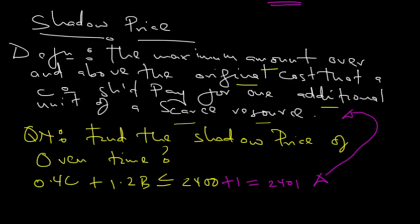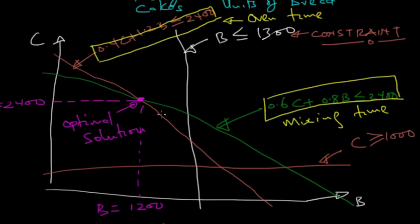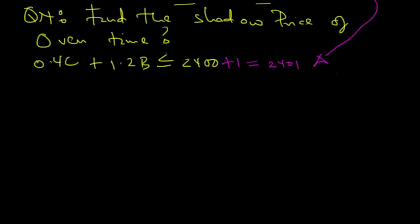So we've made the available time increase by 1 - one additional unit of this scarce resource. Now remember at the optimal point right here we have the intersection of two lines: the line for oven time and the line for mixing time. If we increase the oven time, what happens is that this line moves slightly outwards. What that means is that this point will also shift outwards.